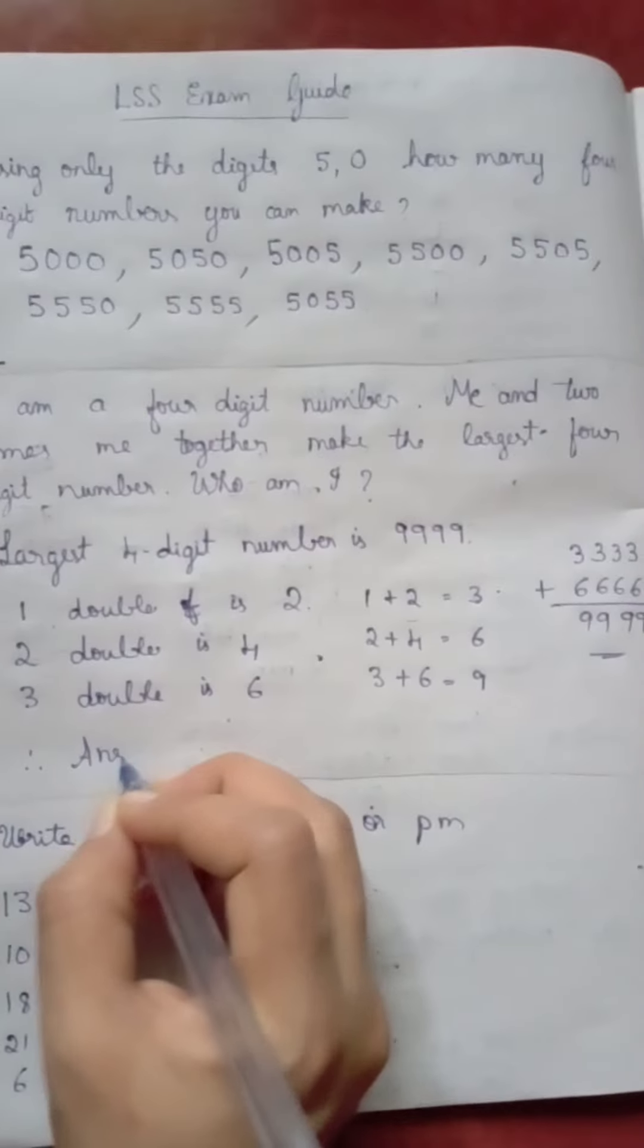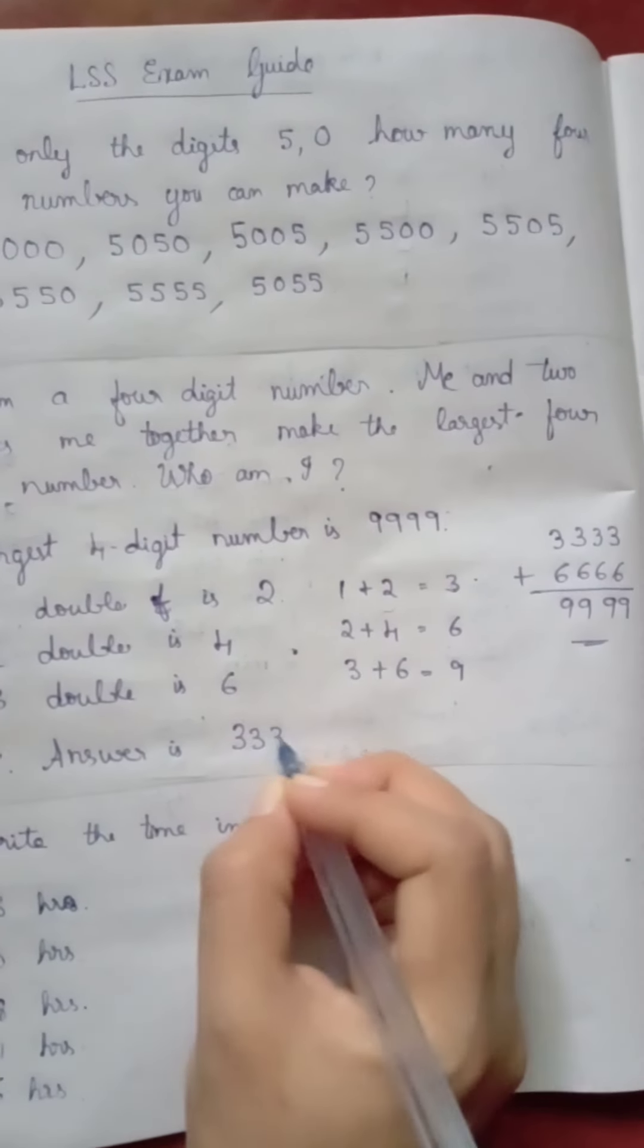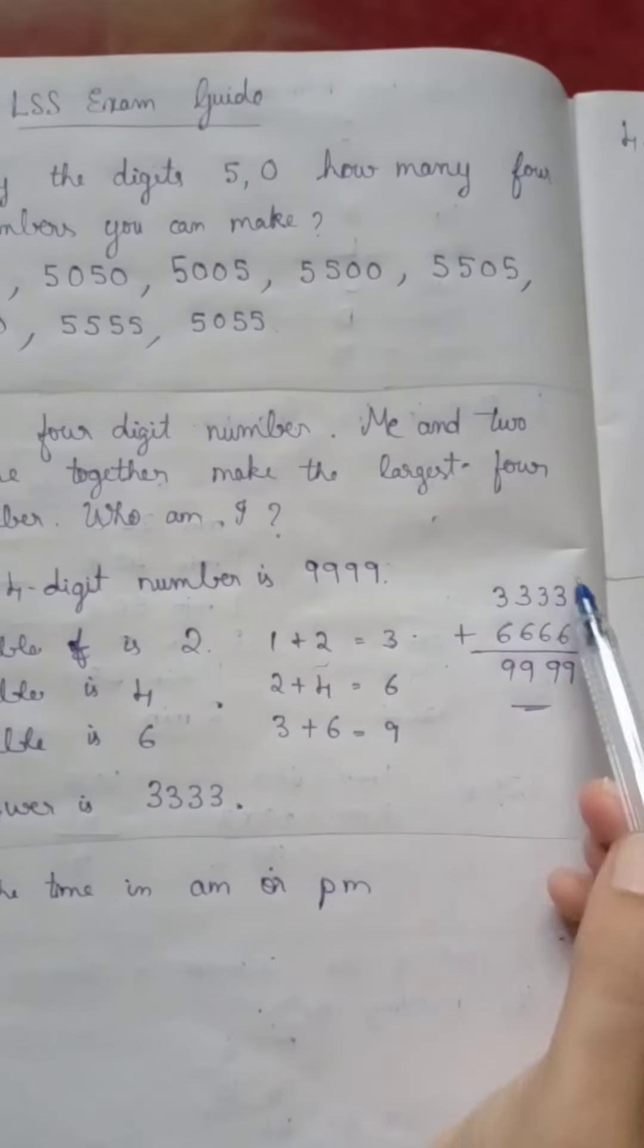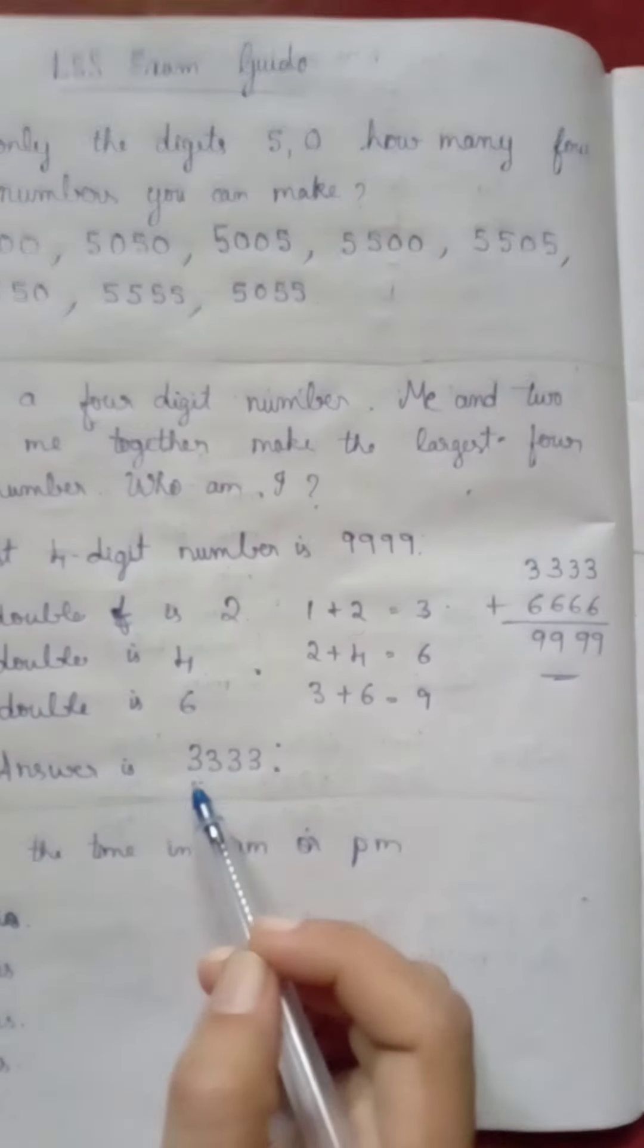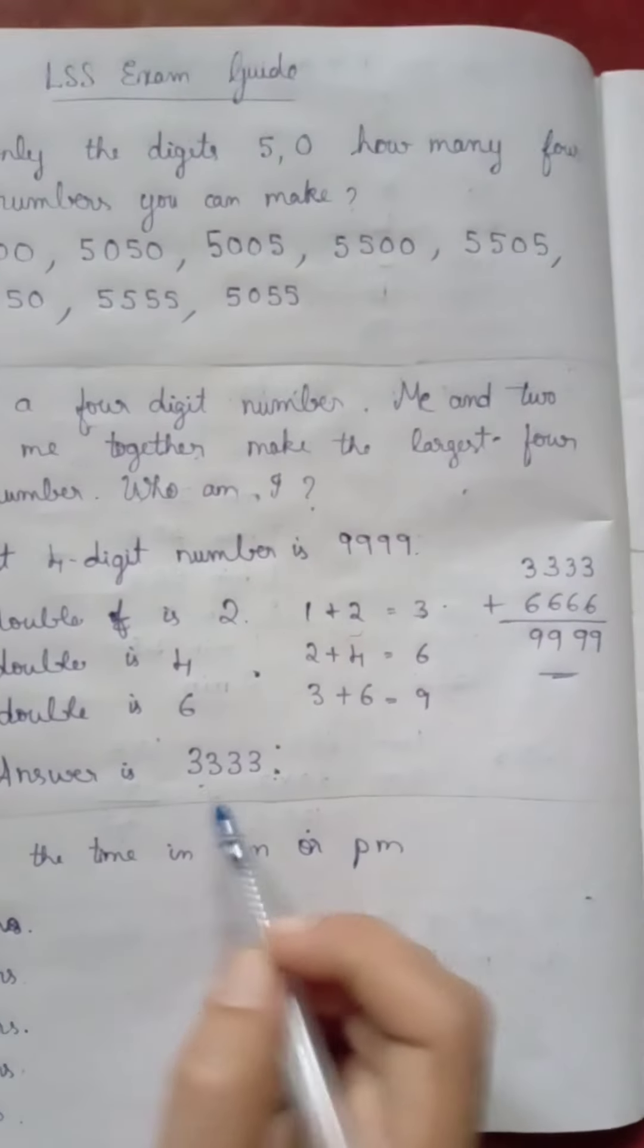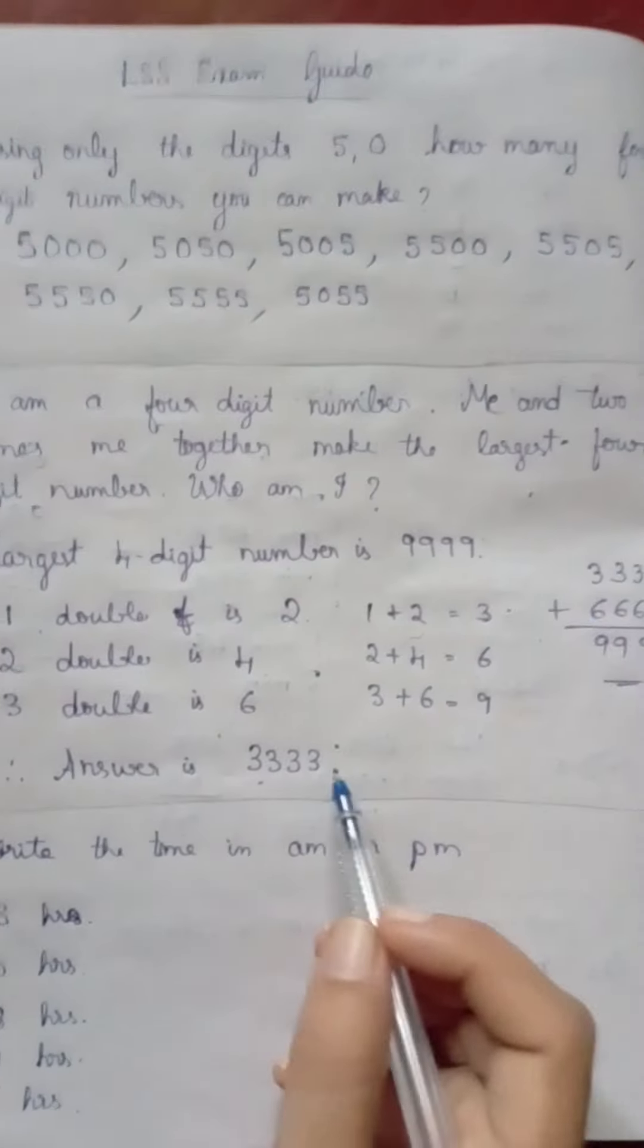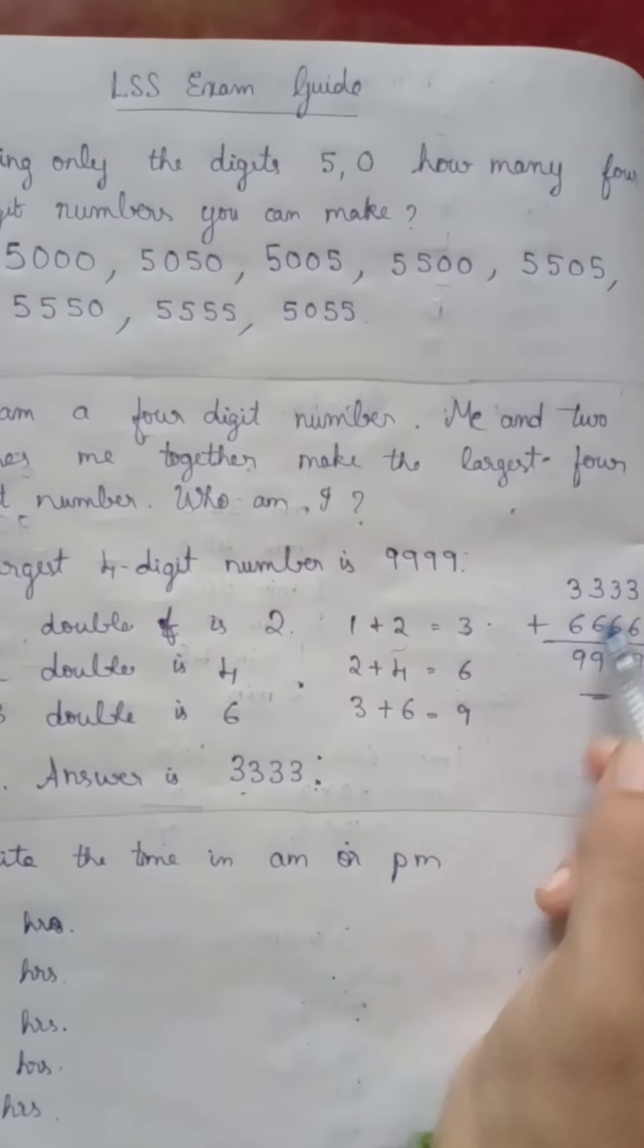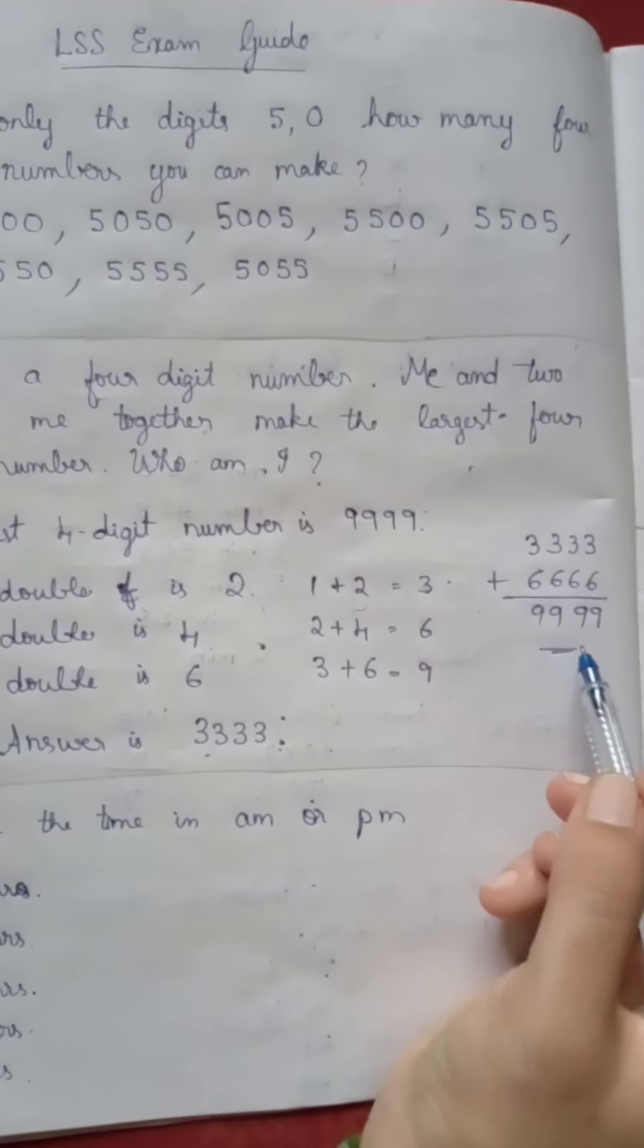Therefore answer is 3333. 3333 is a 4 digit number. Me, that is 3333, plus 2 times of me, plus 2 times of 3333, that is 6666, gives the answer.